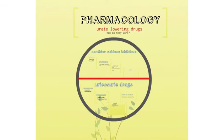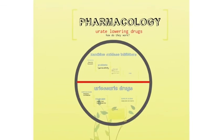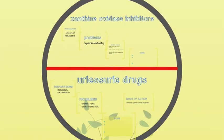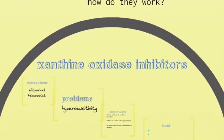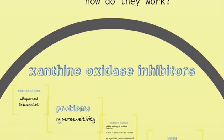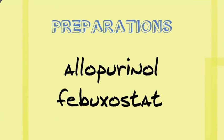A little about the pharmacology of the traditional urate-lowering drugs and how they work. There are xanthine oxidase inhibitors — two of these: allopurinol and febuxostat. Allopurinol has been around for a long time; febuxostat is more recently available.